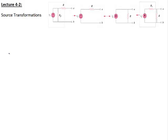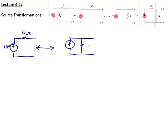Let's do a couple of examples. Our first example: a 10-volt source in series with a 5-ohm resistor. Source transformations are valid when you have voltage sources in series with resistors and current sources in parallel with resistors. So this voltage source in series with the resistor becomes a current source in parallel with the resistor. The resistor is still 5 ohms. The value of the current source is found from Ohm's Law: 10 divided by 5 means the current source is 2 amps. The current source points up because the positive on the voltage source points up.